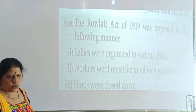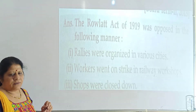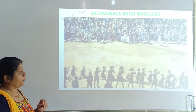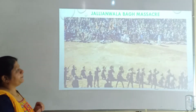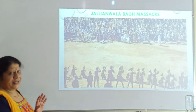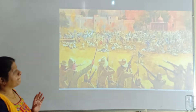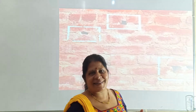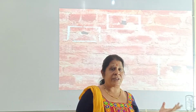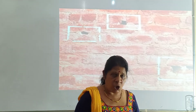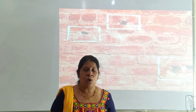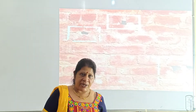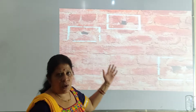How was the Rowlatt Act opposed? Rallies were organized in various cities. Workers went on strike in railway workshops and shops were closed down. Now look at this picture — do you see these bullet marks? This is the Jallianwala Bagh massacre. These bullet marks that you see are still there; it's a memorial right now. This is the wall where people had jumped to escape the bullets.